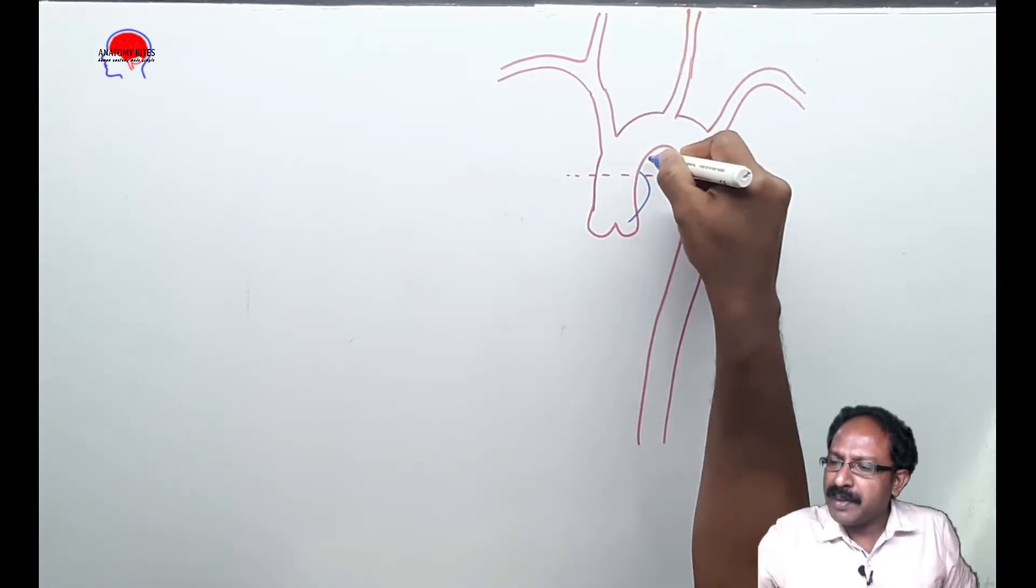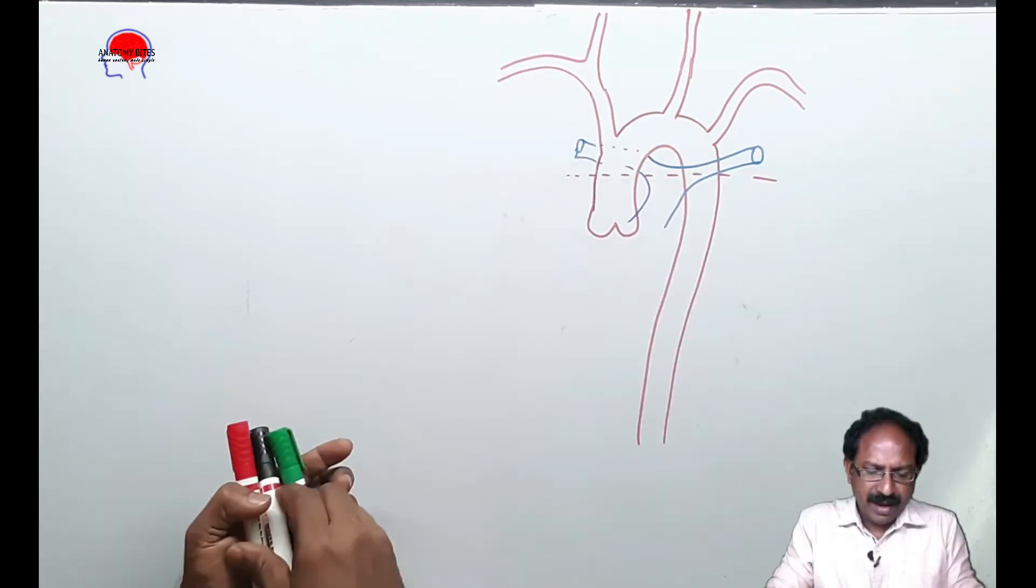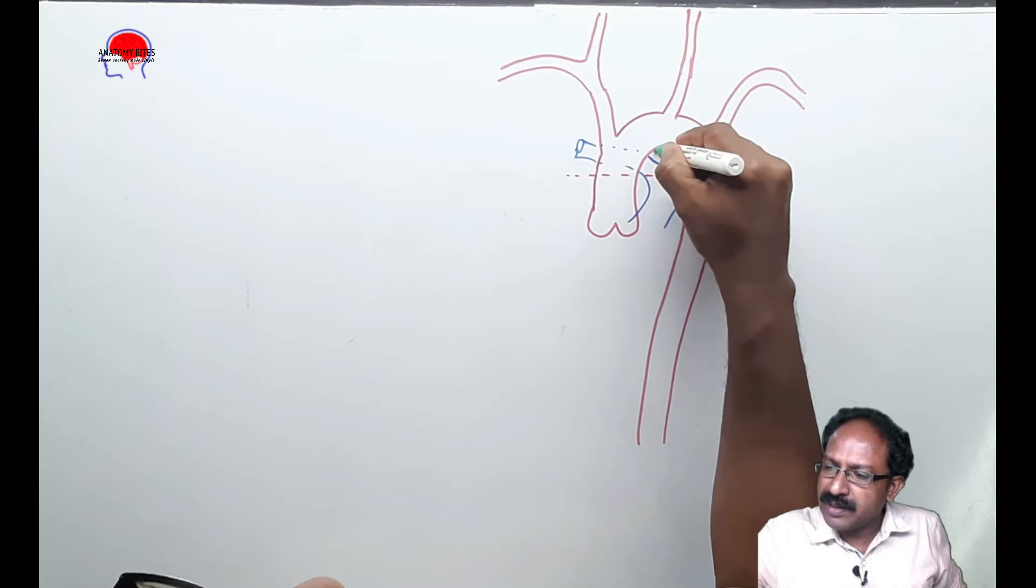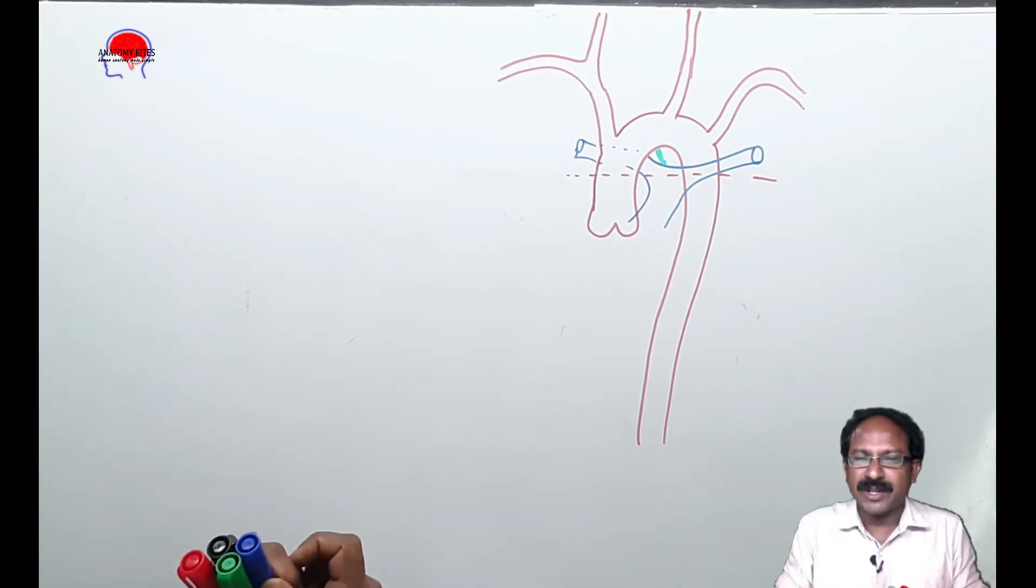You will find the pulmonary trunk here. This is the pulmonary trunk, and there's a small ligamentous structure connecting the pulmonary trunk with the arch of aorta. I would like to discuss two important nerves related to these main arteries.